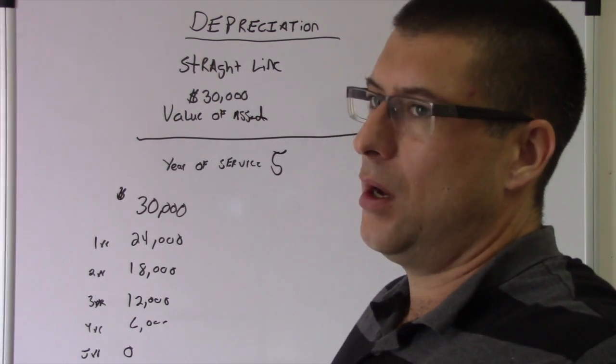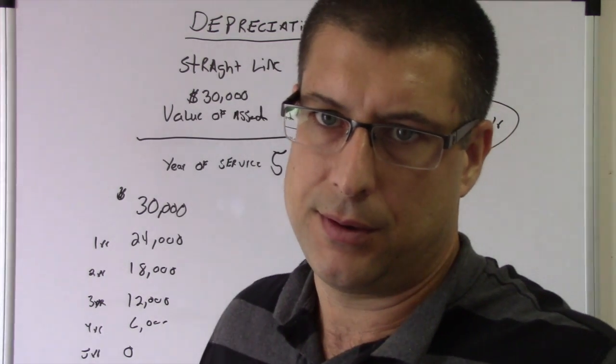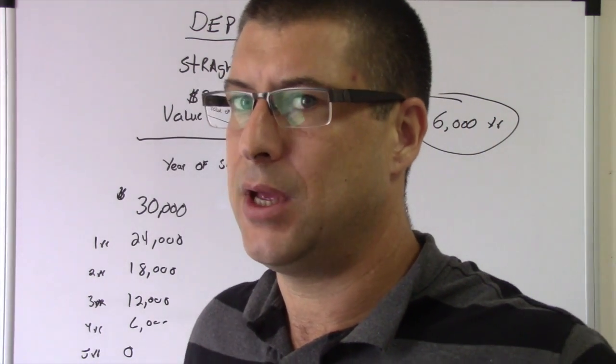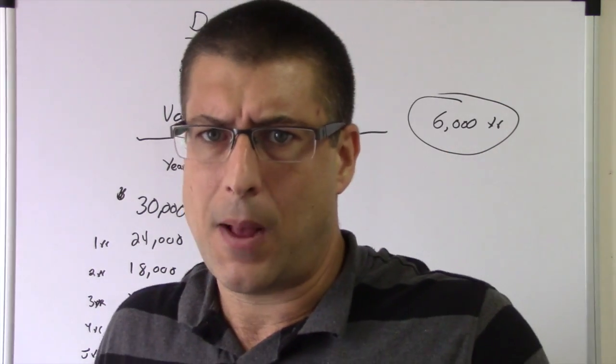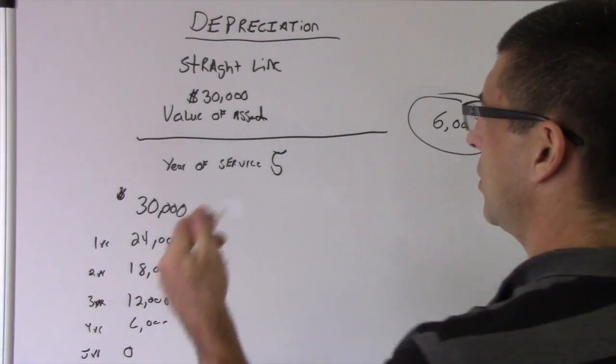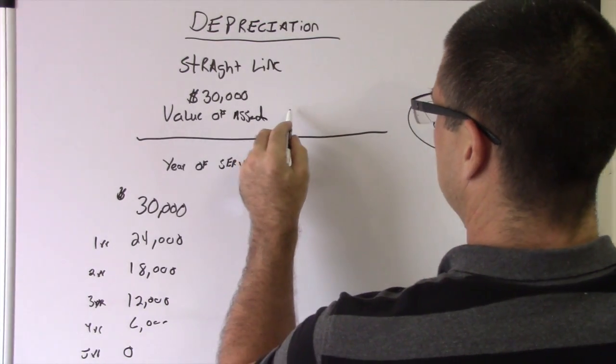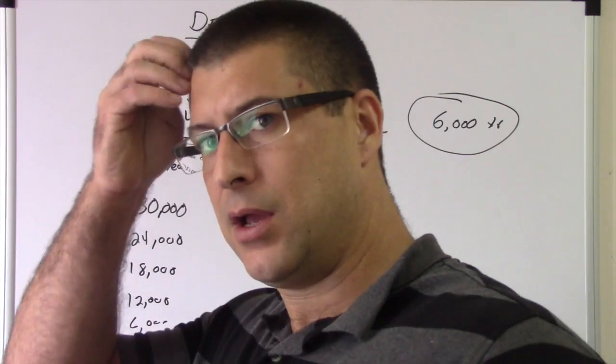In all the examples you're gonna see, you're gonna see a salvage value. In real life, I don't know if you really bring in a salvage value, but you can. Usually it's value of asset minus—all the other examples you're going to see will say minus the salvage value. That's book life.